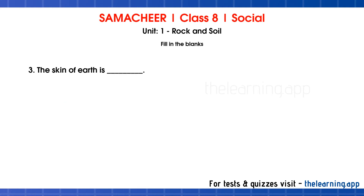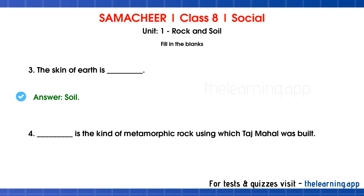Third question: The skin of earth is dash. Correct answer is soil. Fourth question: Dash is the kind of metamorphic rock using which Taj Mahal was built. Correct answer is white marble. White marble is a metamorphic rock.